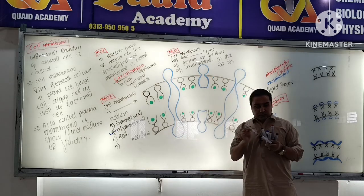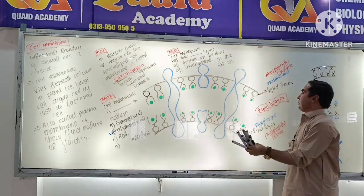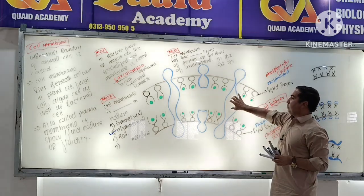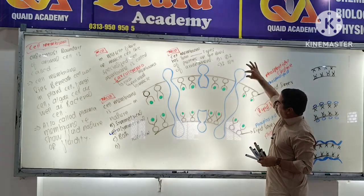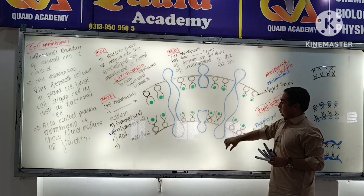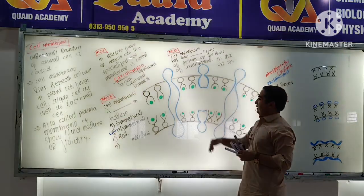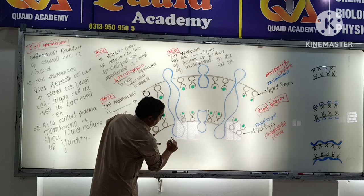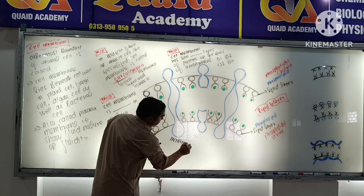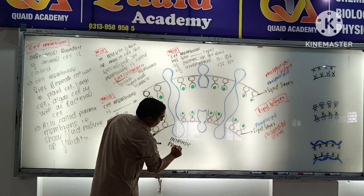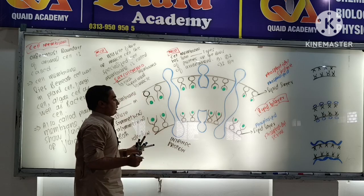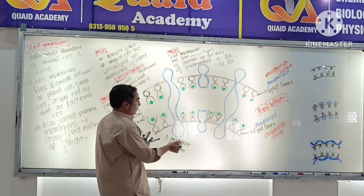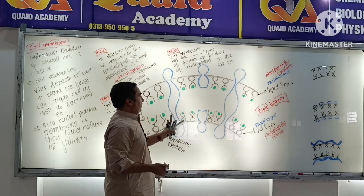On the basis of arrangement of the cell membrane, the intrinsic protein is fully embedded within the membrane. When the membrane is examined, the intrinsic protein is required to be embedded on the inner side.